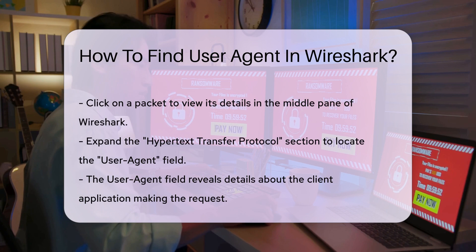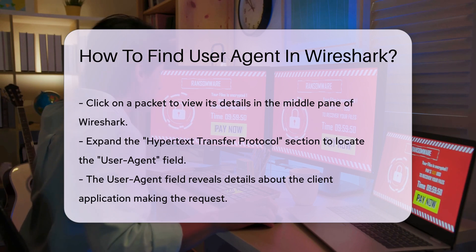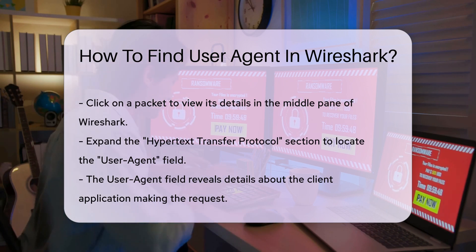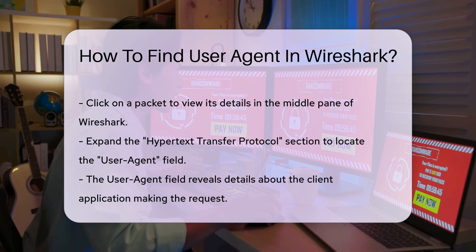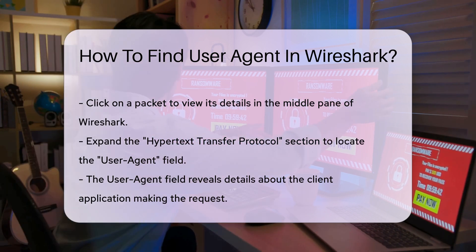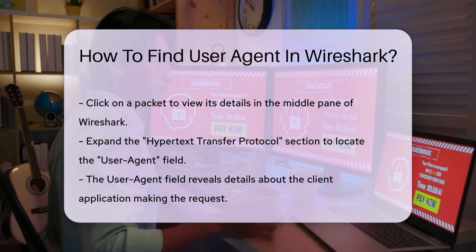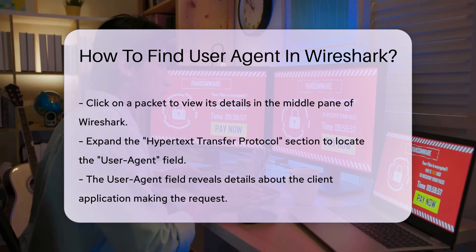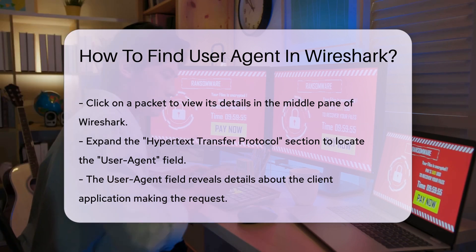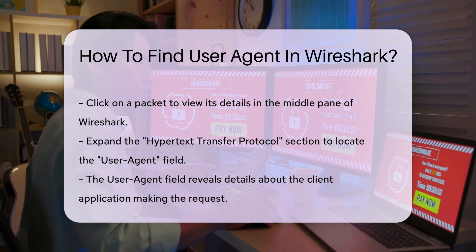Expand the Hypertext Transfer Protocol section. Within this section, locate the user agent field. This field provides the details about the client application making the request. If the user agent is not visible, ensure that you are analyzing HTTP traffic. HTTPS traffic may require decryption to view the user agent string.